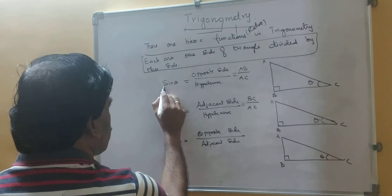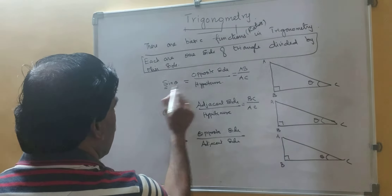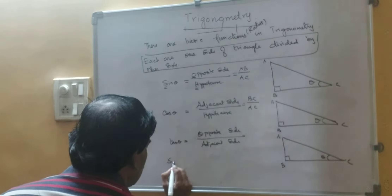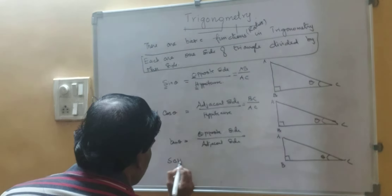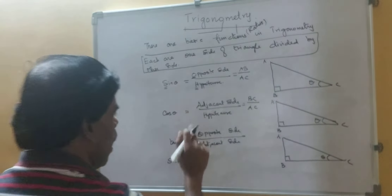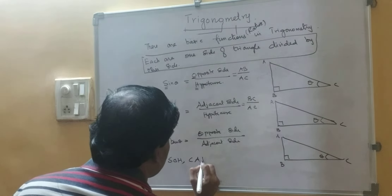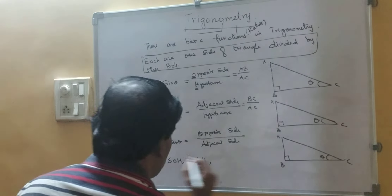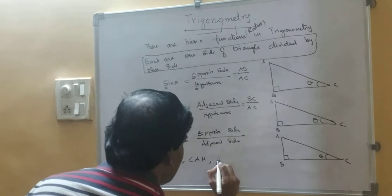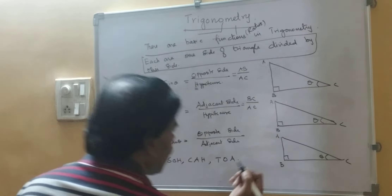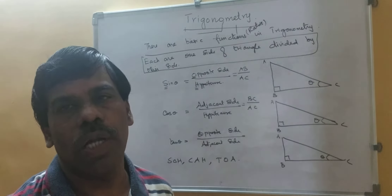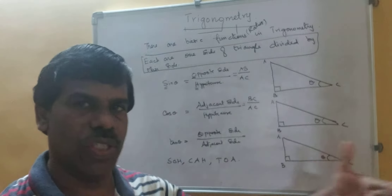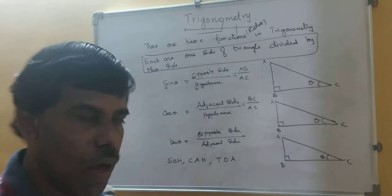Now, what is the shortcut to remember these? Sin theta — S, O, H. Cos theta — C, A, H. Tan theta — T, O, A. This is the shortcut formula to remember sine, cosine, and tangent.